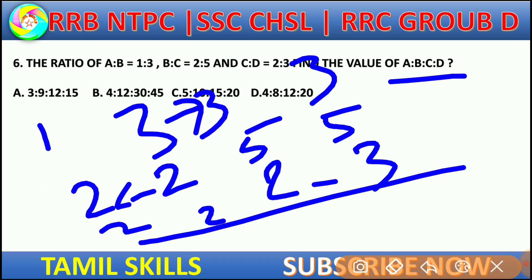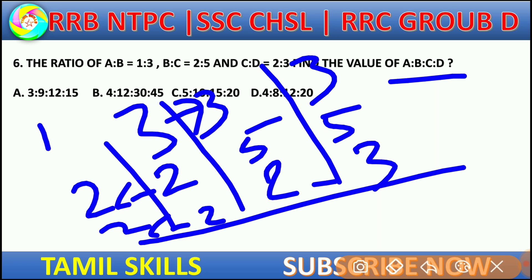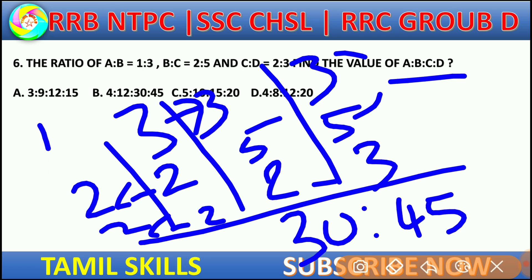Using the LCM method to combine ratios: 1, 3, 2, 5, 2, 3. Writing them out: 3, 6, 2, 4, 5, 4. The combined ratio simplifies to 4 is to 2 is to 3 is to 5.